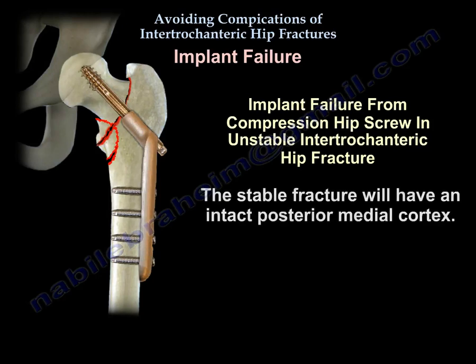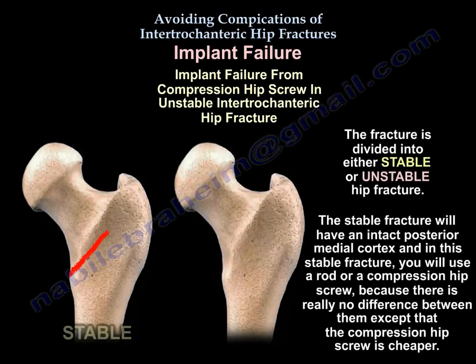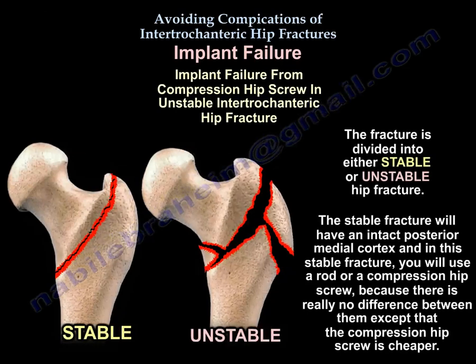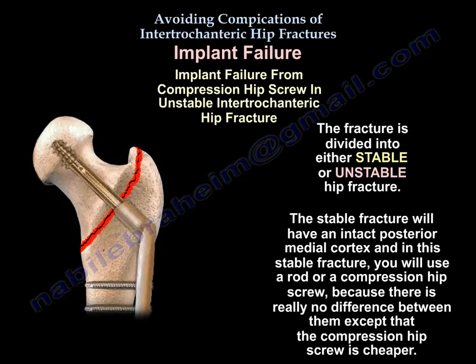A stable fracture will have an intact posteromedial cortex. The fracture is divided into either stable or unstable. For a stable fracture, you can use a rod or a compression hip screw, as there is really no difference between them except that the compression hip screw is cheaper.